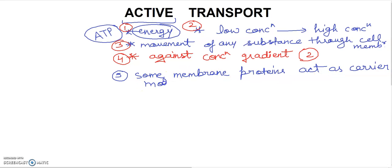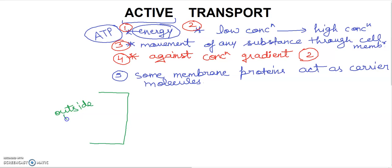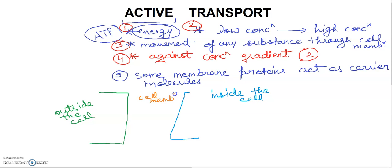Now let's look at this picture to understand what can be transported from one side to another side of the membrane. You can see that this is the outside of the cell. If we understand this membrane — suppose this is the inside part — this is the cell membrane. Here we have low concentration on one side.